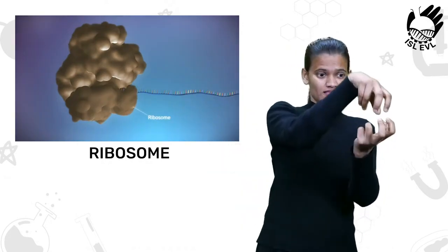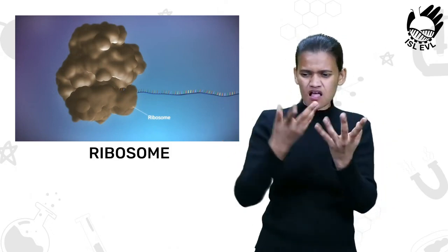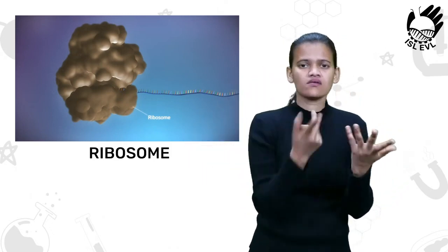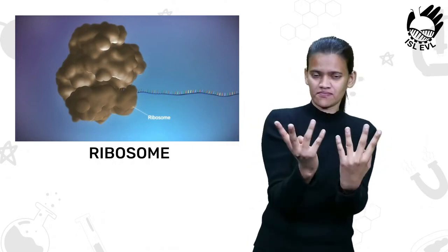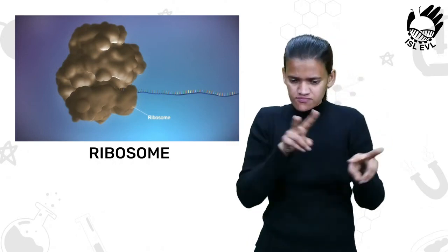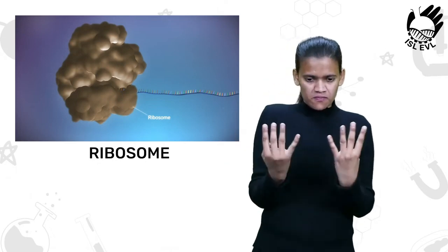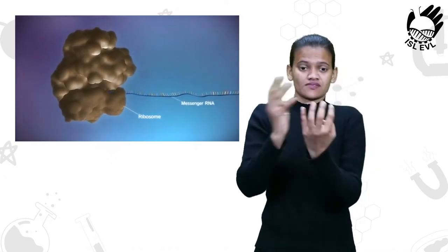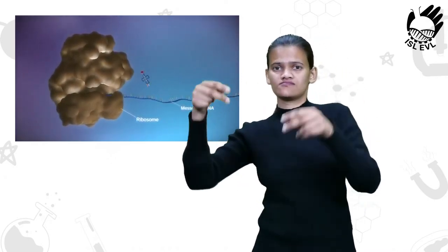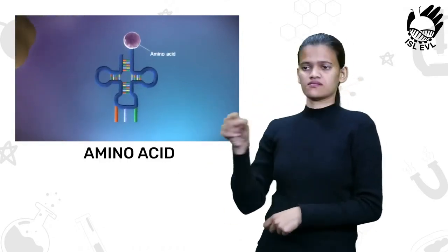Bind to the messenger RNA, the ribosomes read the code in the messenger RNA to produce a chain made up of amino acids. Transfer RNA molecules carry the amino acids to the ribosomes. The messenger RNA reads three bases at a time. As each triplet is read, a transfer RNA delivers corresponding amino acids. This is added to the growing chain of amino acids.